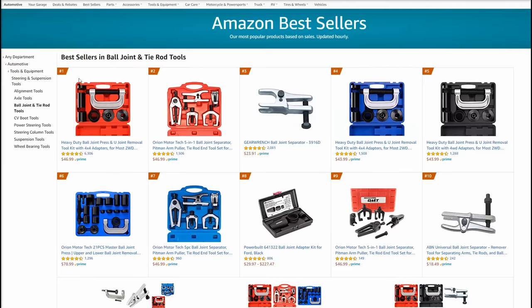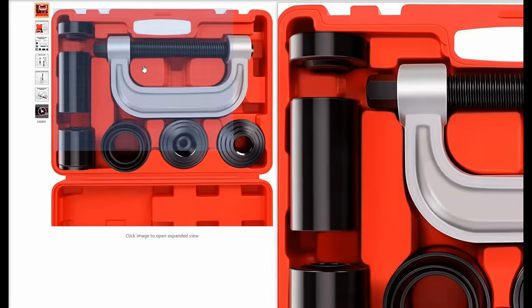This is the best-selling ball joint press on Amazon, and not only that, the second best-selling is also Orion Motor Tech just in a blue case, the third is the same in a black case, and even the fourth best-selling is Orion in their master set orientation.